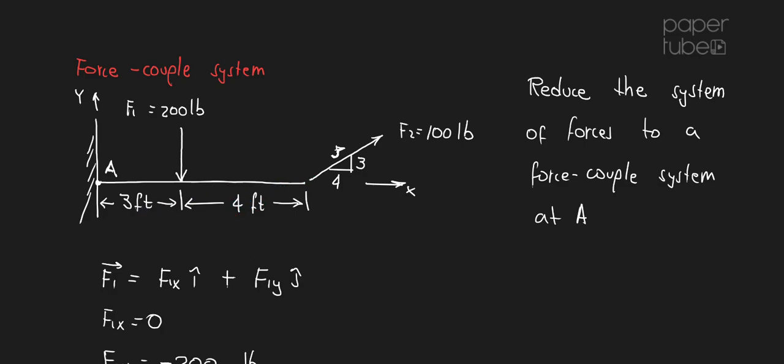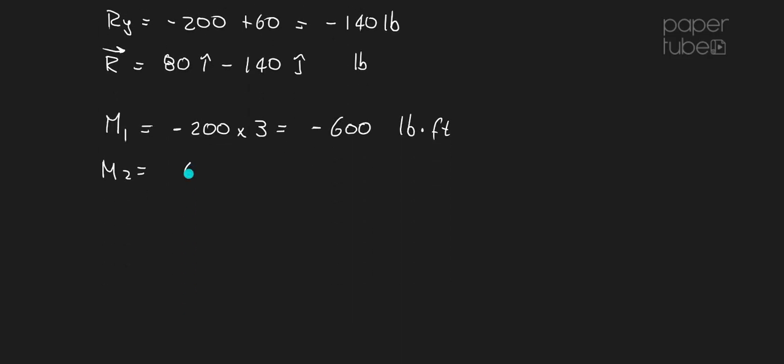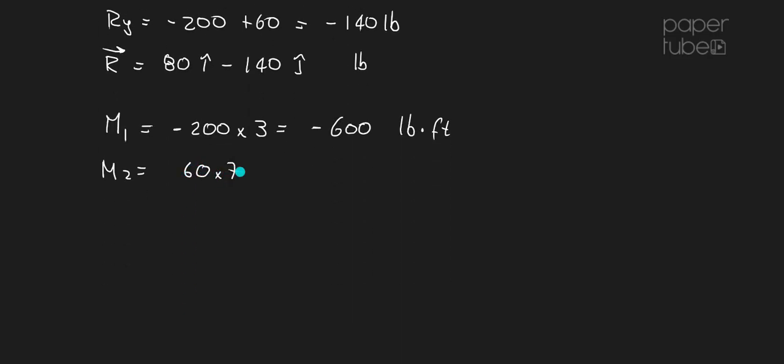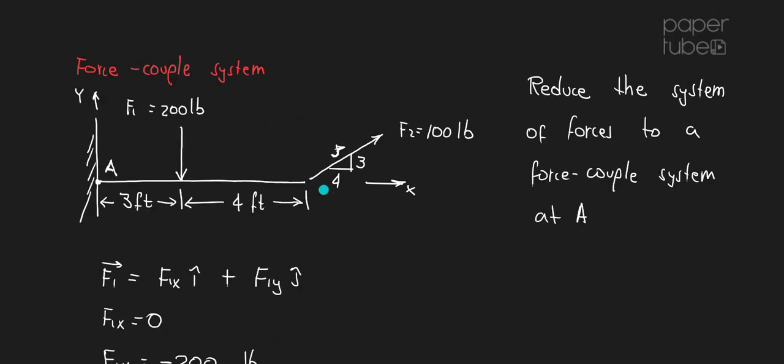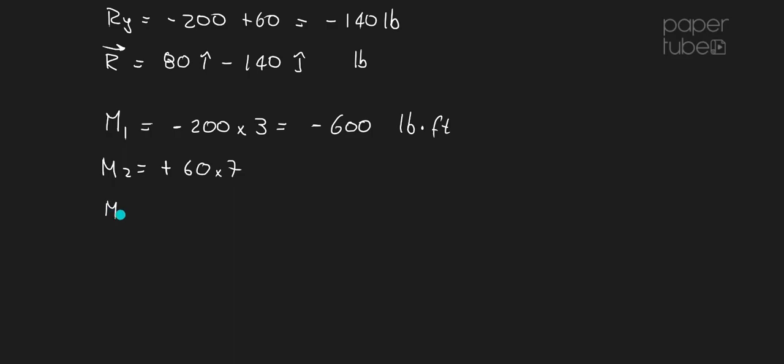On F2y, we said that it was 60 pounds, so it will be 60 times 7, and let's define this sign. Is it going to be positive or negative? Well, based on my right-hand rule, this is going to be trying to make it rotate counterclockwise about A, so it's going to be positive. So the total moment is going to be equal to minus 600 plus 420, and that will be equal to minus 180 pounds-foot.